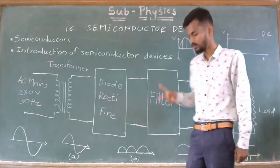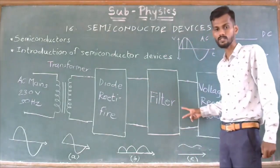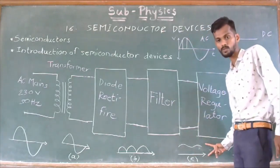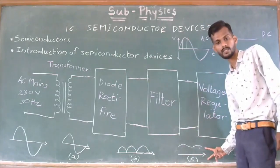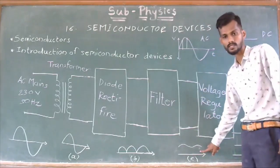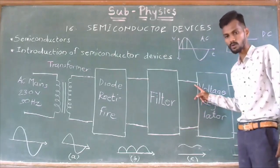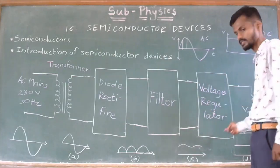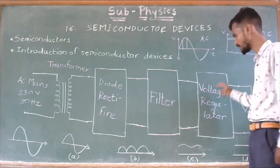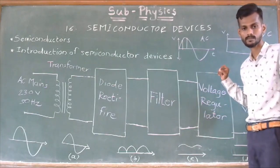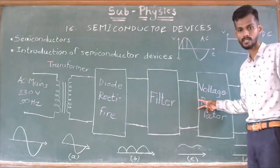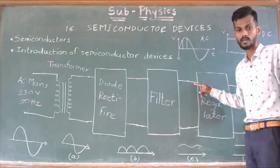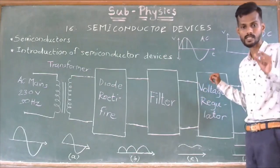So, filter circuit reduces these ripples and gives us output waveform, which is shown here. Output of filter circuit is connected to the voltage regulator circuit. Now, what voltage regulator circuit does? The voltage regulator restricts the voltage, which is output of filter, at desired value.